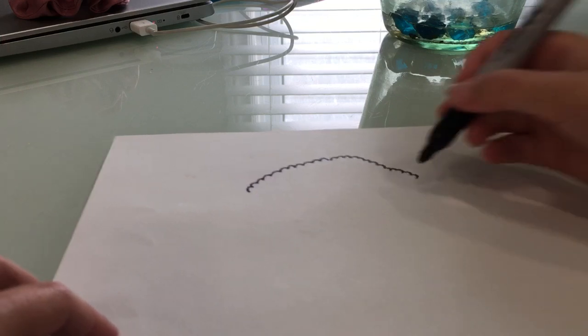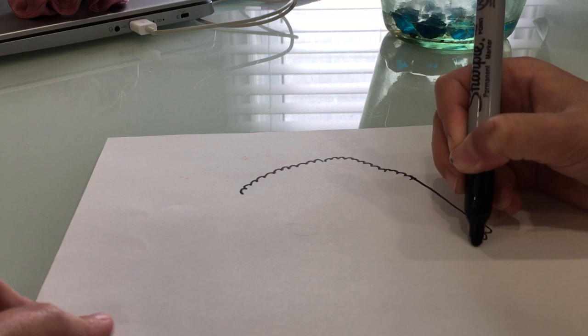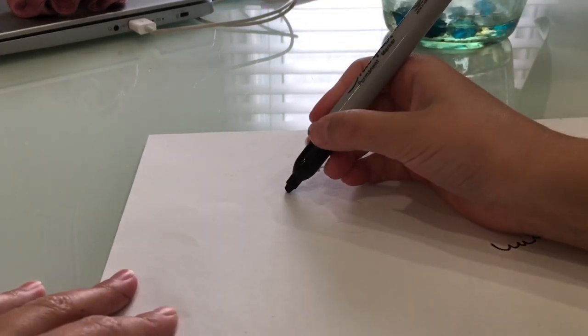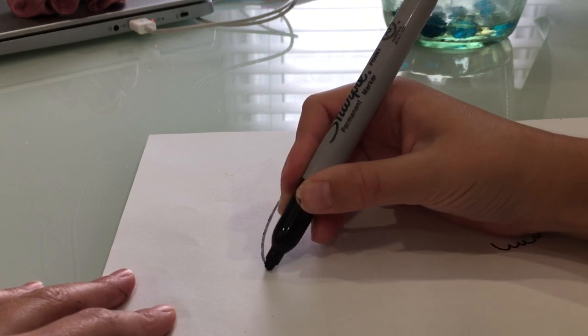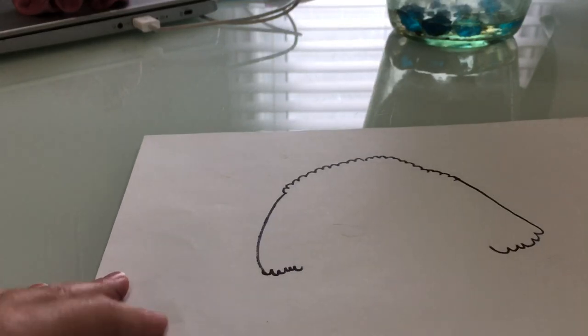Next, you need to draw a line and then followed by some more bumps. This will be the ears. You can make the line a bit curved as well. And then bumps for the other side as well.